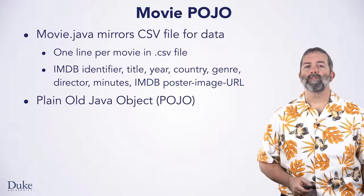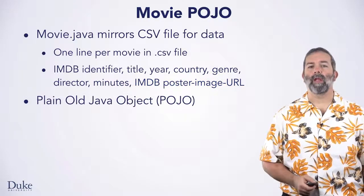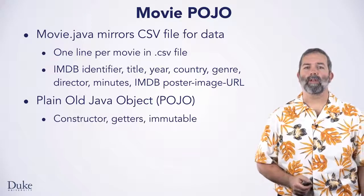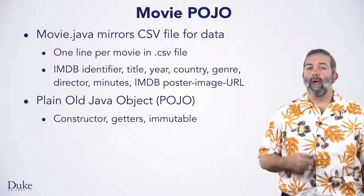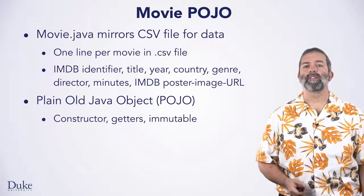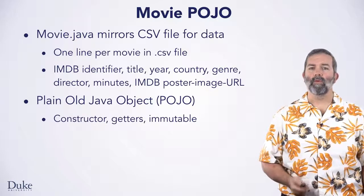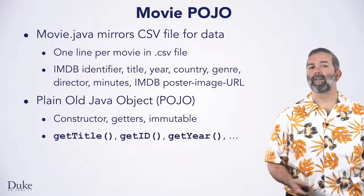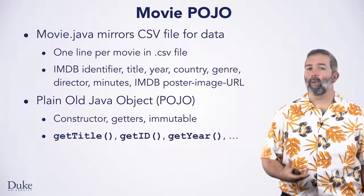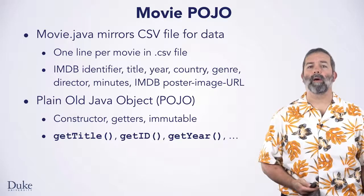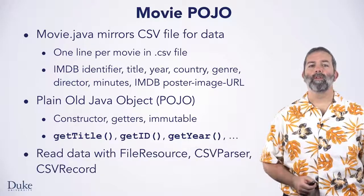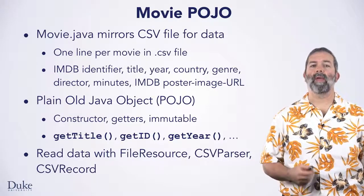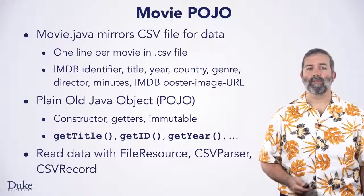You'll read the CSV file and use the POJO class we've created to store data for each movie. The movie.java class has a constructor and several getter methods for accessing data about the movie. Once a movie object is created, it doesn't change. The get methods include getTitle, getID, getYear, and more to access information about each movie. You'll read this data using the edu.duke file resource class and the Apache CSV parser you've had practice with using.